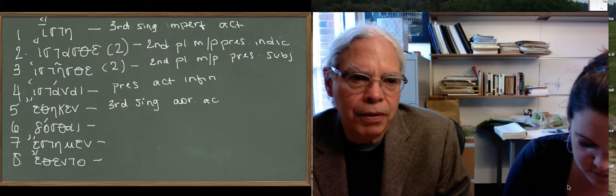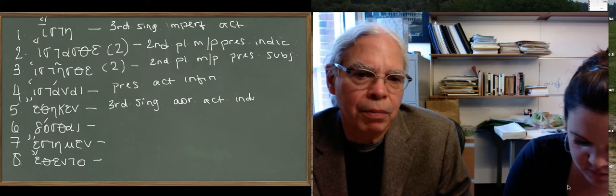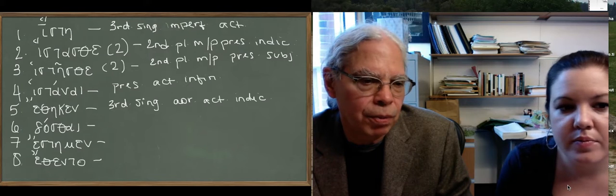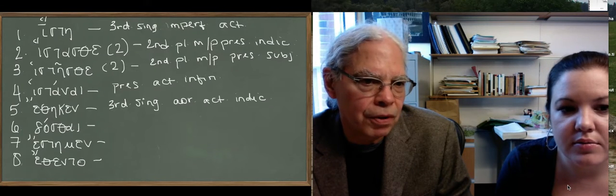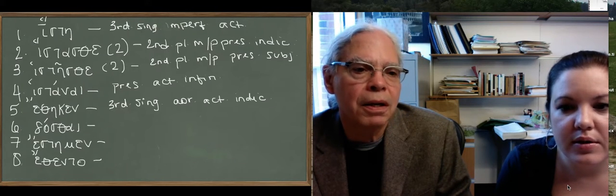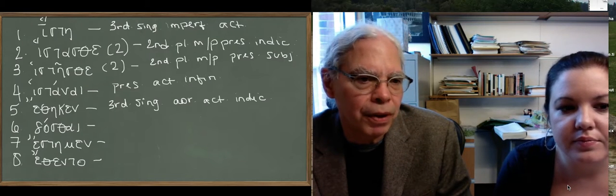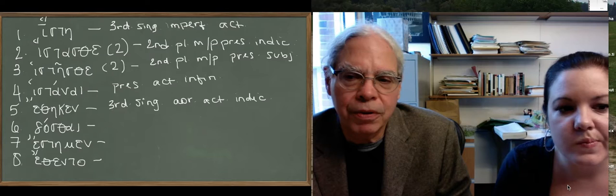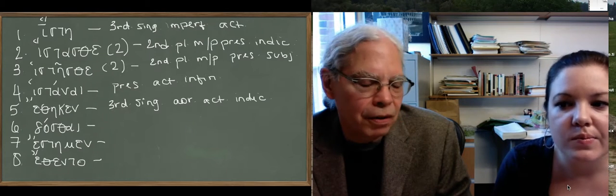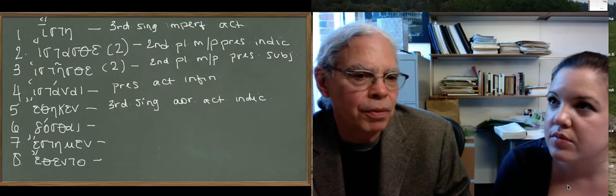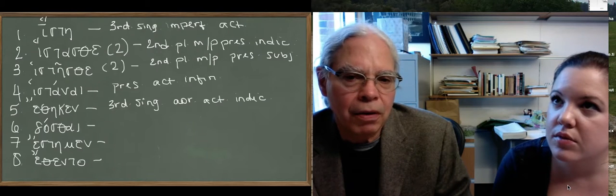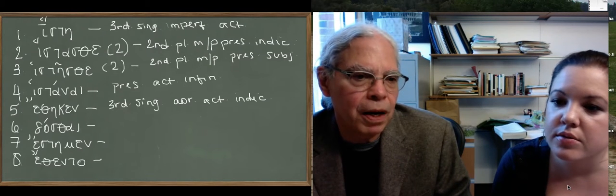I think we can understand the kappa if we think about this. What would the perfect of this verb look like in the third person singular? It would be te, they, ken. And that's probably where the kappa comes from, by opposition to the present, to the aorist. Te, they, ken, as opposed to e, they, ken. But not all of these athematic verbs have it.